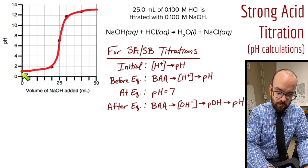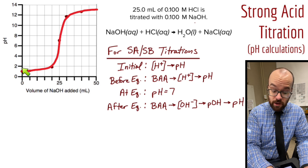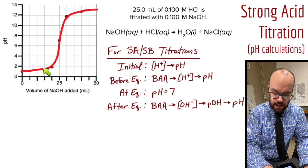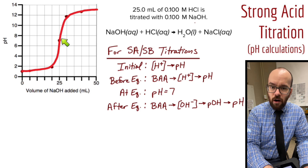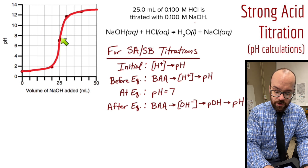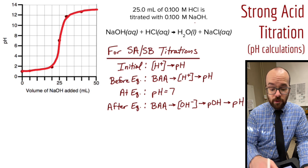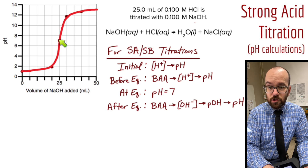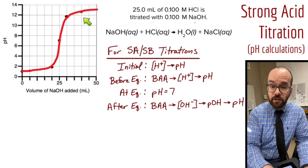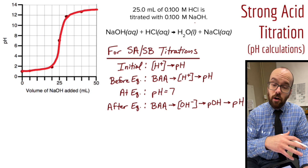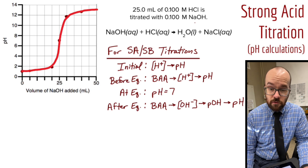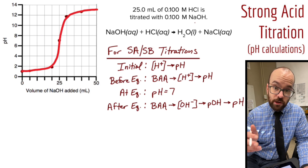One more thing: what's the main species present at each point along this curve? At the very beginning and before the equivalence point, we primarily have H⁺ ions. Right at the equivalence point, we've neutralized all of them — we have the same amount of H⁺ and OH⁻ as pure water. As soon as we cross the equivalence point, the main species is hydroxide. Before the equivalence point: mostly H⁺; after: mostly OH⁻. That's how you calculate pH at all points along a strong acid, strong base titration curve. The weak acid titration curve is very different, so check out that video when you're ready.